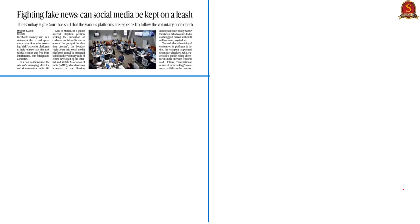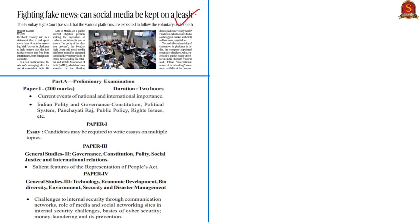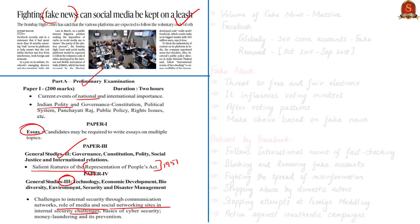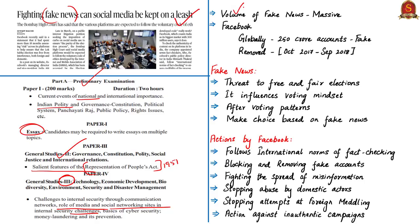The next article appears on page number 13 in the Chennai edition and page number 11 in the Delhi edition. It is about fake news and misinformation, particularly at the time of elections. The information becomes part of current events of national importance and Indian polity under the preliminary examination syllabus, and could be used in essays, under salient features of the Representation of People's Act in GS2, and under the role of media and social networking sites in internal security challenges in GS3. The volume of fake news spread through social media platforms is massive.